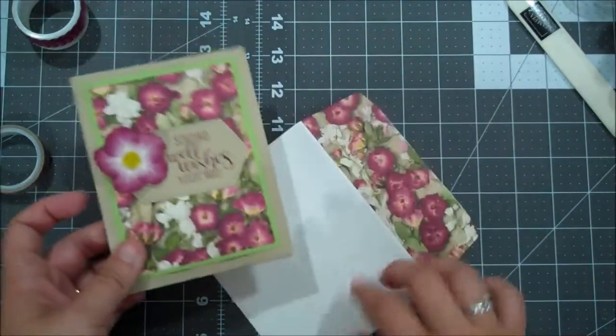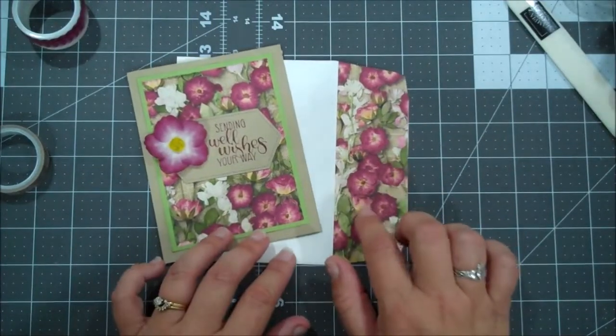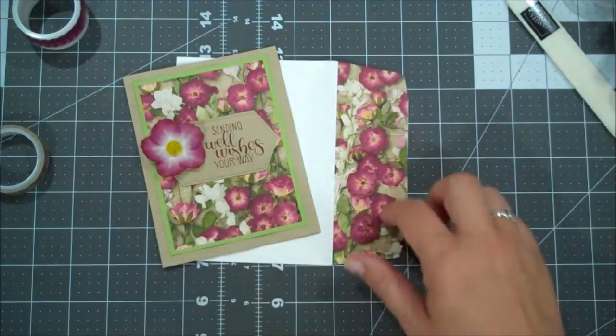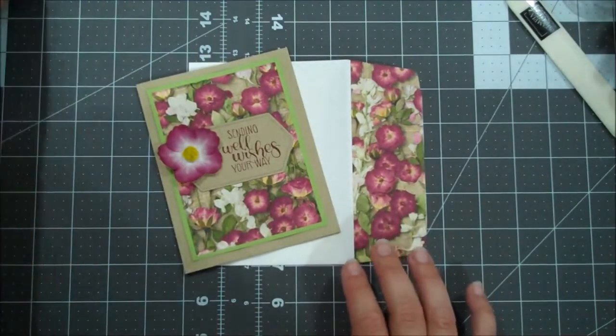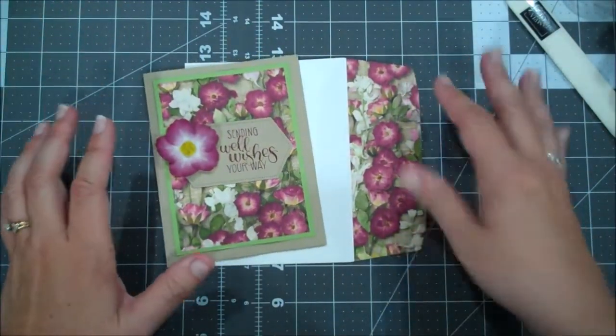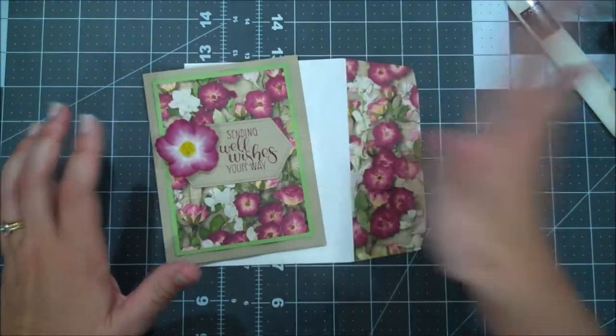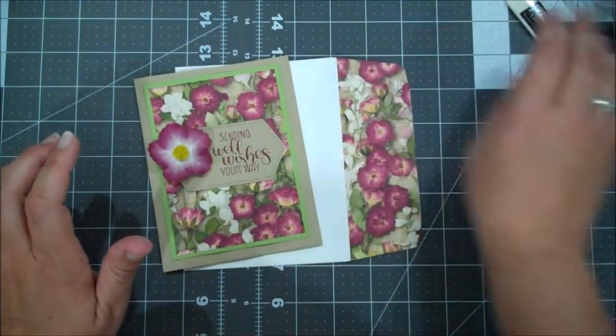And then as you saw when we started the video, I just took another bit of our designer series paper and just adhered that to the flap of my whisper white envelope just so that it coordinates. You've seen me do that numerous times - you just add a little bit of adhesive, put down the sheet, and then use your snips to trim it out.